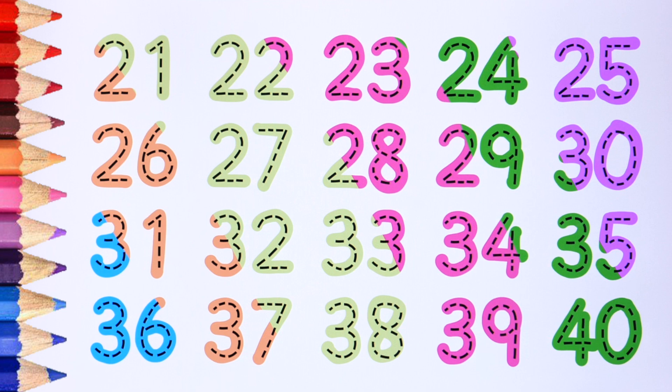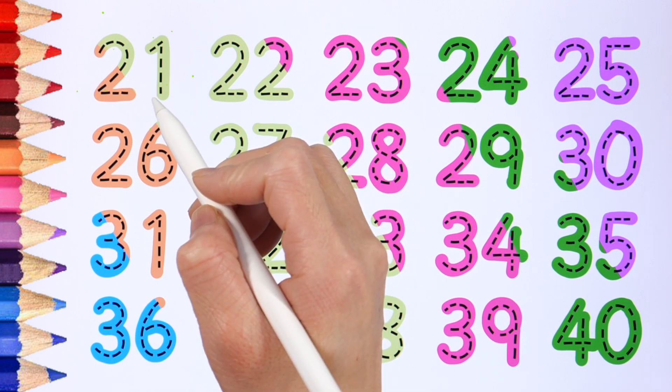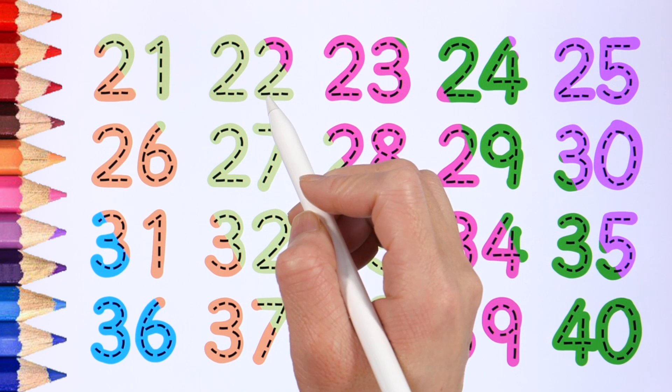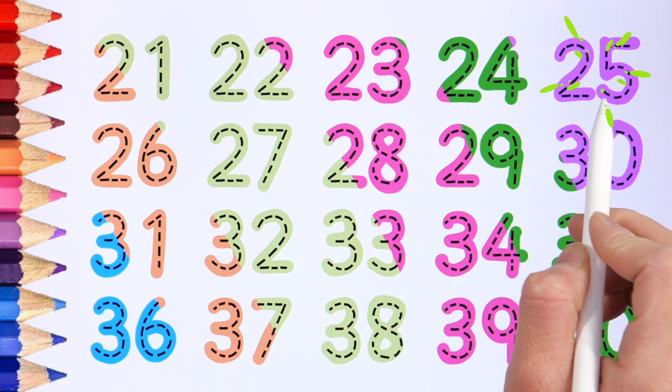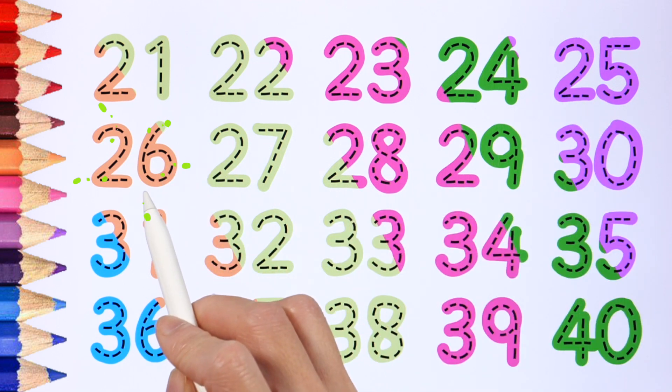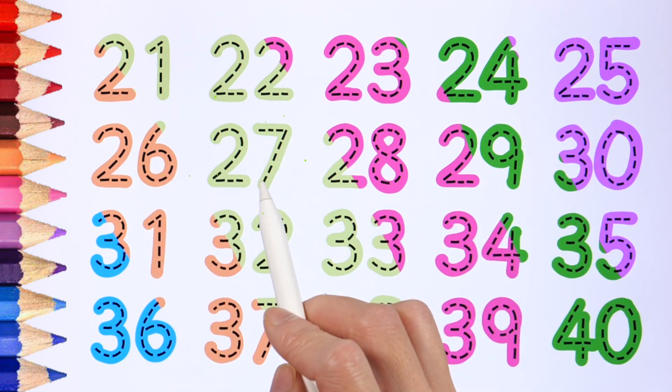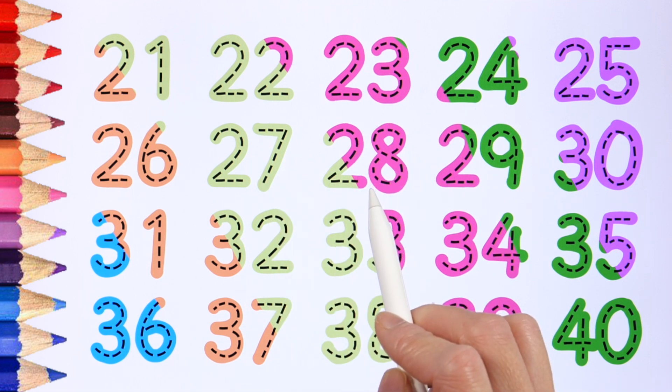Let's read numbers 21 to 40 one more time. 21, 22, 23, 24, 25, 26, 27, 28, 29.